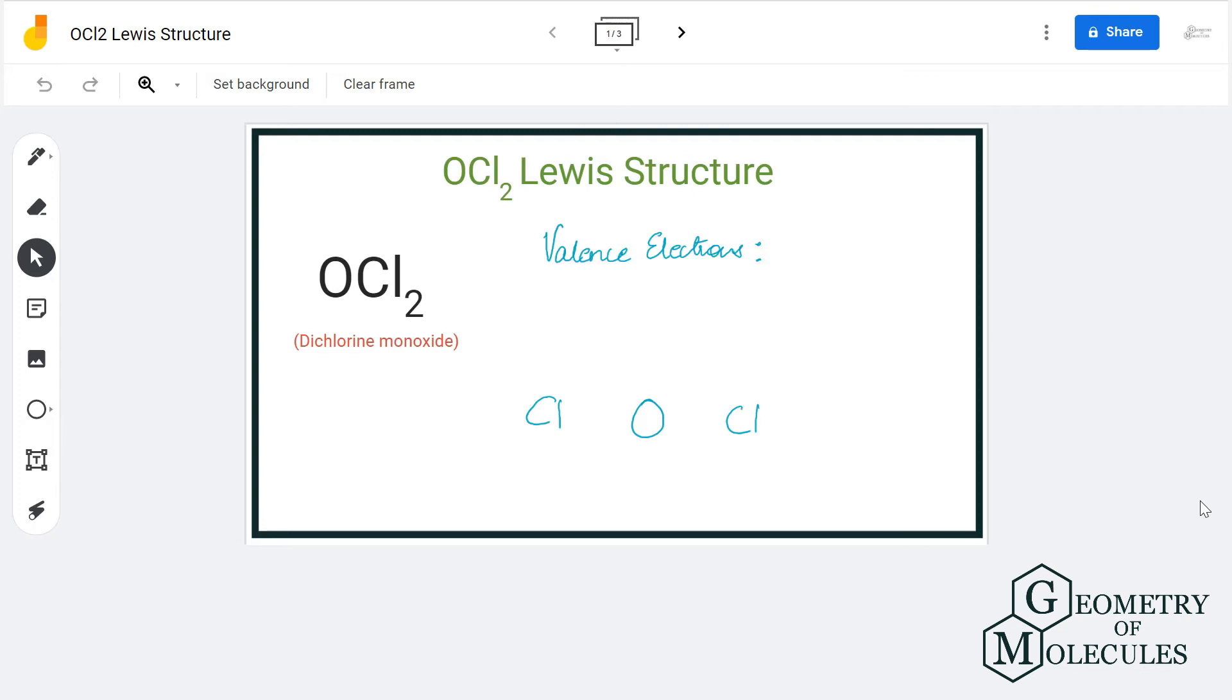Today we're going to look at the Lewis structure for dichlorine monoxide, with chemical formula OCl2, also written as Cl2O. It is an inorganic compound.